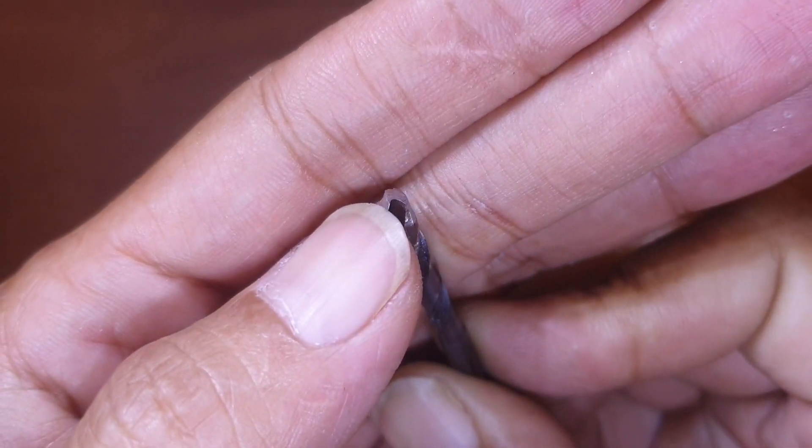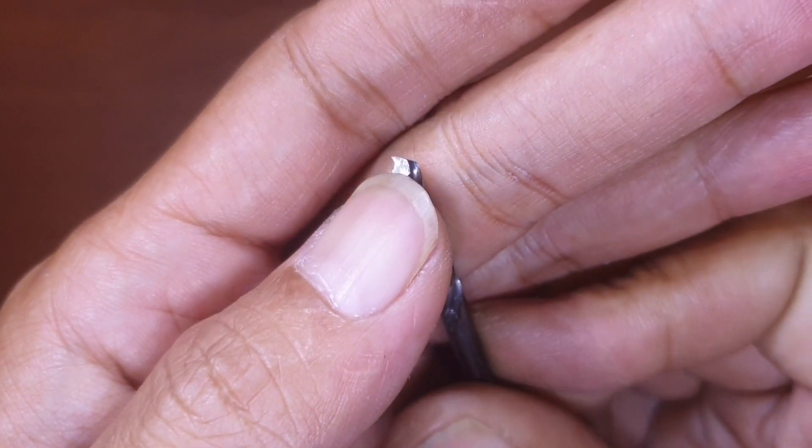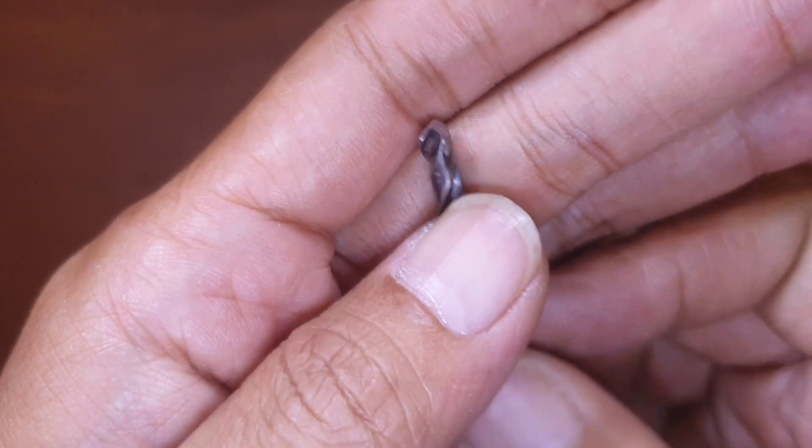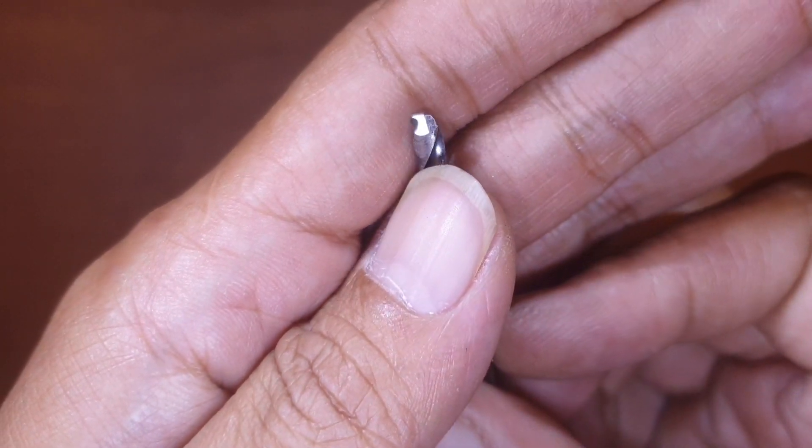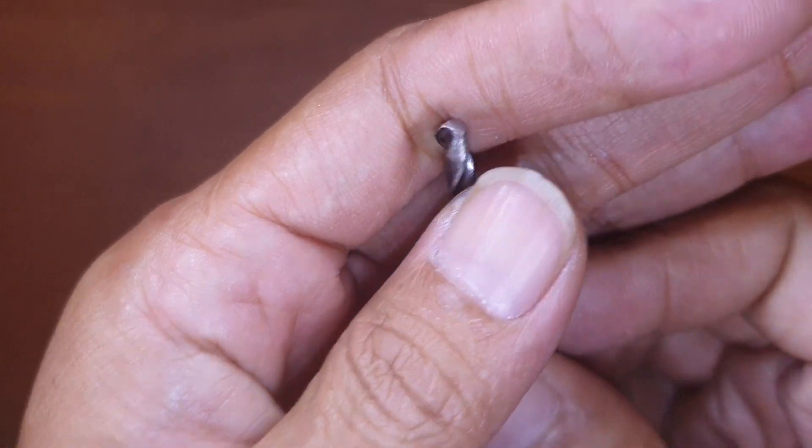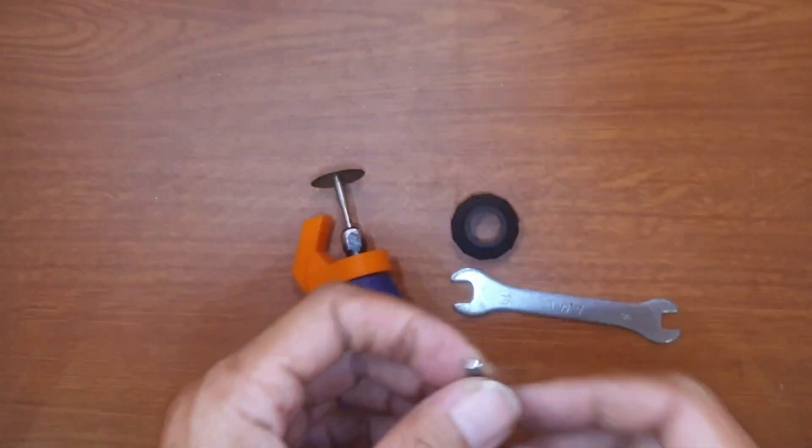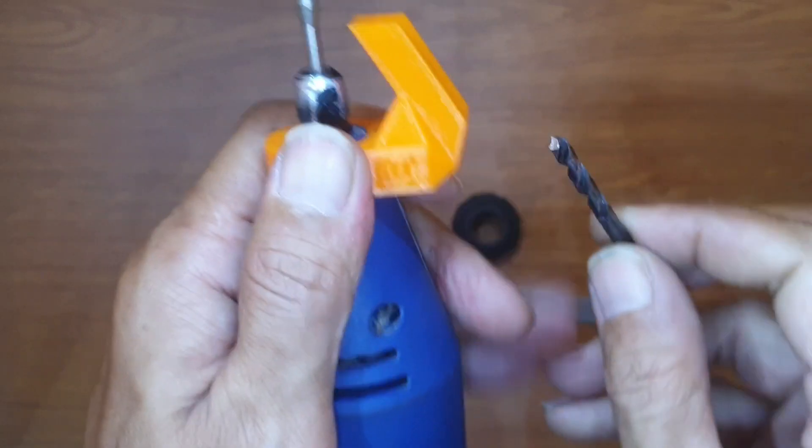This cannot drill properly because it still has these lines like this, not straight. Now I'll try to sharpen it using this tool, like this.